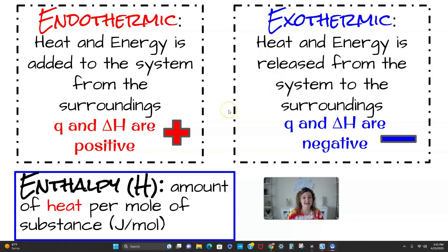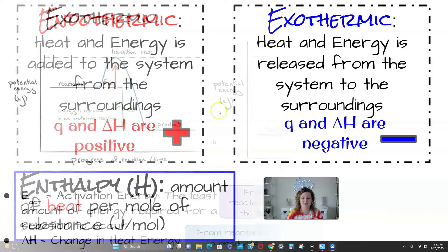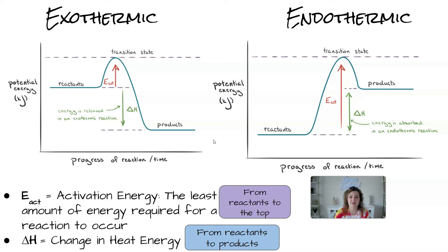Exothermic, on the other hand, is exactly the opposite. It's heat and energy being released from the system to the surroundings. So it's going to be a negative Q or a negative delta H value.